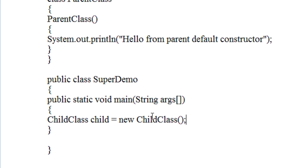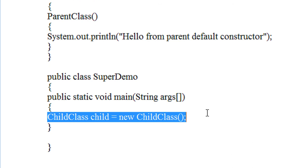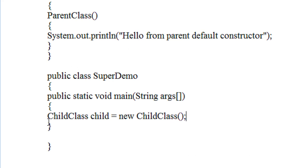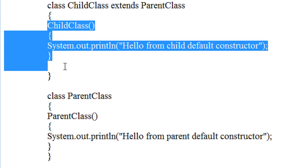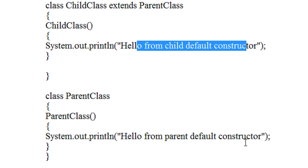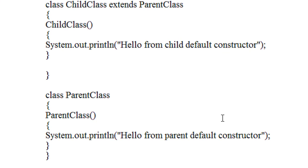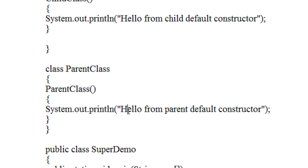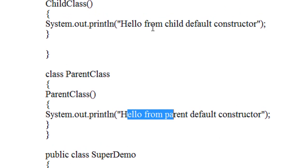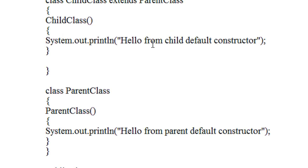From the rule, you can see when we create an object of a class that will automatically invoke the constructor and this message will appear. But the actual thing is that when we create an object of a child class it will first invoke the parent constructor, then only it will invoke the child constructor. The message from the parent default constructor will appear first, then the output from the child constructor will appear.